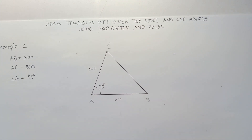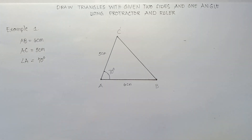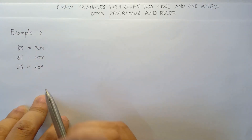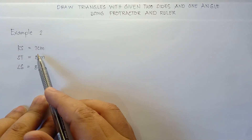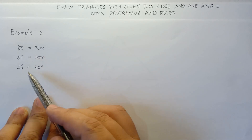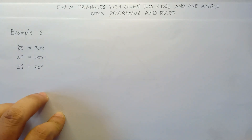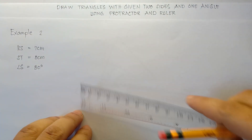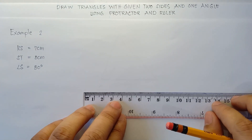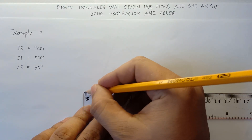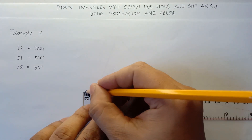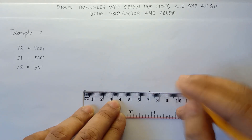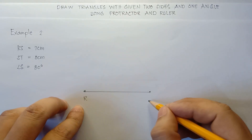Let's try example number two. We have given line segment RS that is 7 centimeters, side ST that is 5 centimeters, and angle S that is 50 degrees. First, draw the line 7 centimeters for RS. Label this point R and then point S — RS, 7 centimeters.